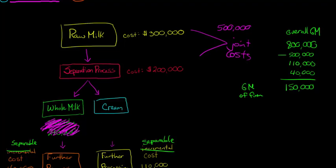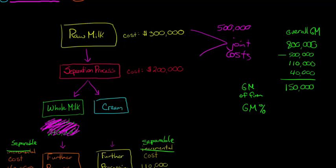Now we need to calculate the gross margin percentage. We take the gross margin of $150,000 and divide it by $800,000 total sales, and that gives us 18.75% — that's the gross margin percentage for the entire firm.